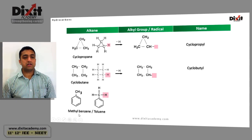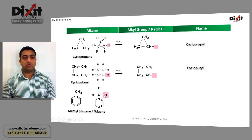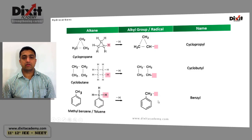Consider methylbenzene. The structure is a methyl group attached to a benzene ring. If we remove a hydrogen from the CH3 group, we get the benzyl group.